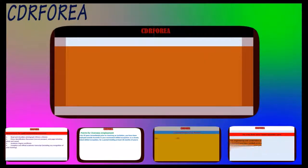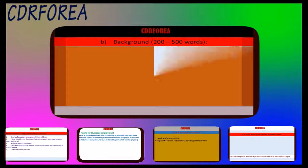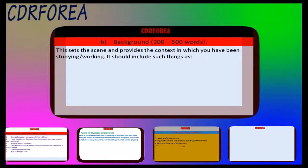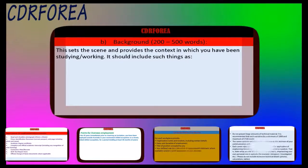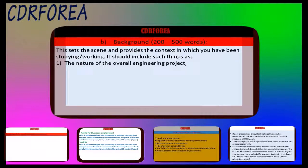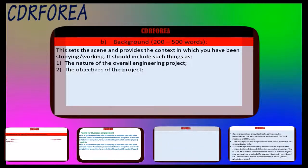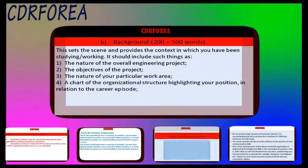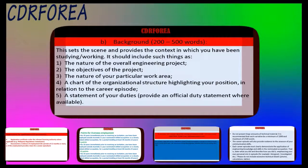B. Background — 200 to 500 words. This sets the scene and provides the context in which you have been studying/working. It should include: 1. The nature of the overall engineering project. 2. The objectives of the project. 3. The nature of your particular work area. 4. A chart of the organizational structure highlighting your position in relation to the career episode. 5. A statement of your duties — provide an official duty statement where available.